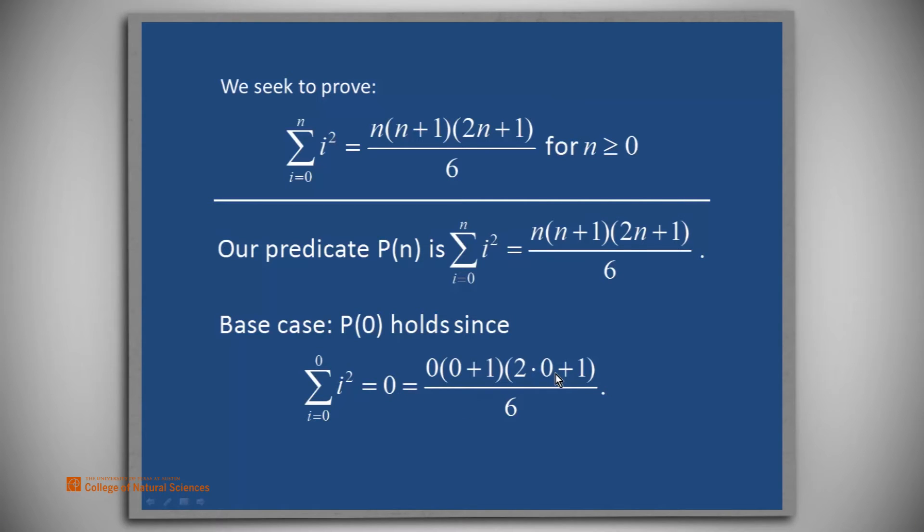And the right-hand side is going to be 0 times (0+1) times (2×0+1) divided by 6. And this product is simply 0 as well. So we do get base case holding.